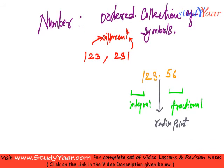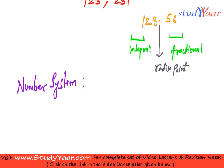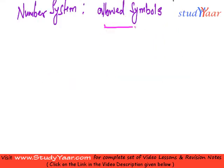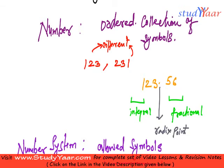Now that we have defined what number is, let's understand what do we mean by a number system. I say number system is something that allows me to specify the allowed symbols. Let's understand what do we mean by allowed symbols. Allowed symbols means the number of symbols that we can use to form a number.